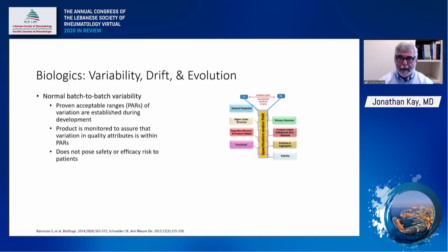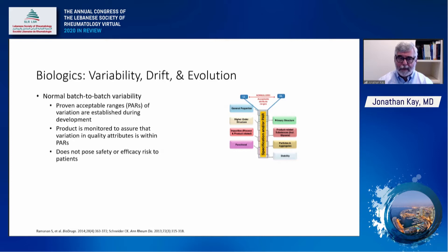All biologic agents are subject to normal batch-to-batch variability, defined as falling within proven acceptable ranges of variation established during development in collaboration between regulators and the manufacturer. These cover categories such as higher order structure, impurities, function, primary structure, product-related substances such as glycation, particulates and aggregates, and stability. The product is monitored over time to assure that variation in quality attributes falls within these proven acceptable ranges, and as long as they do, the product is felt not to pose a safety or efficacy risk to patients.